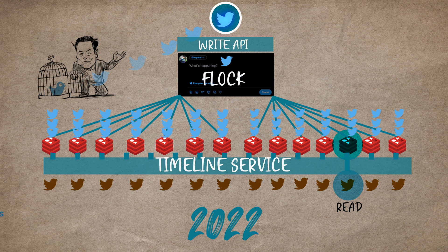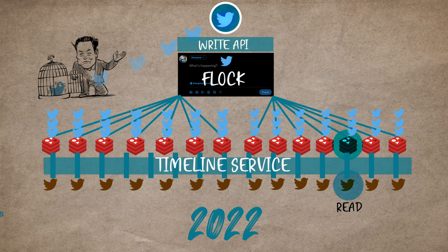The user pulls their home timeline through the timeline service. Going from one single user write to thousands of user writes to solve scaling issues definitely sounds counterintuitive. But this out-of-the-box thinking helped Twitter design systems at the scale it is serving users today.